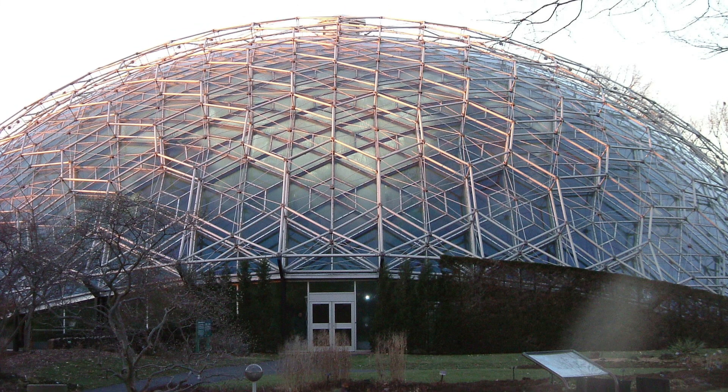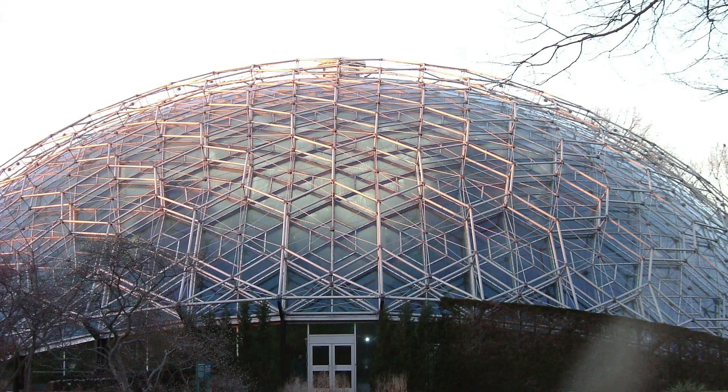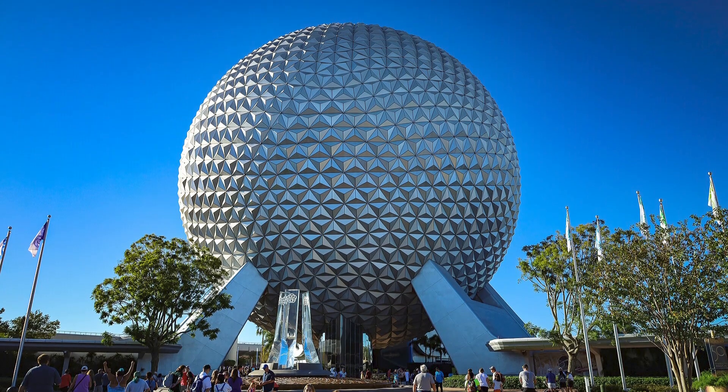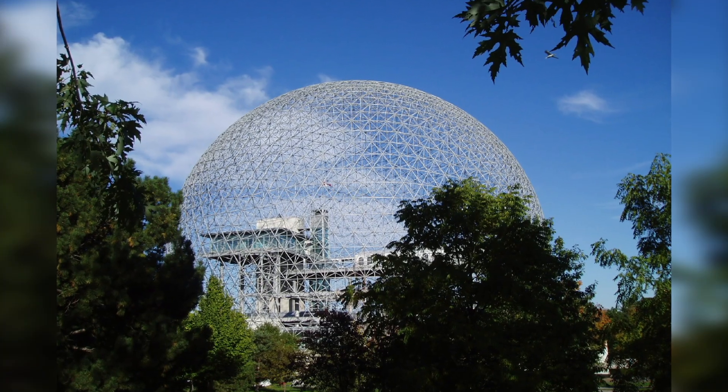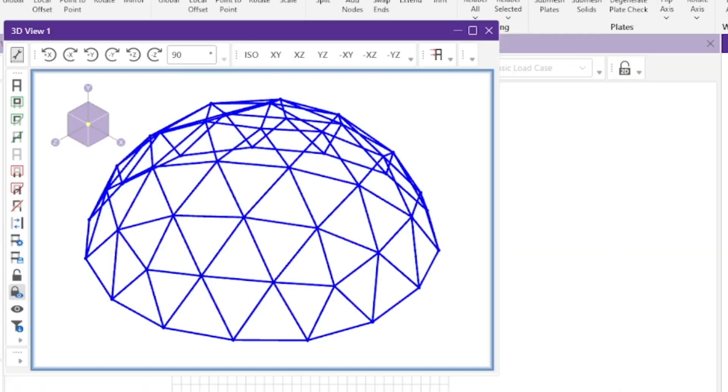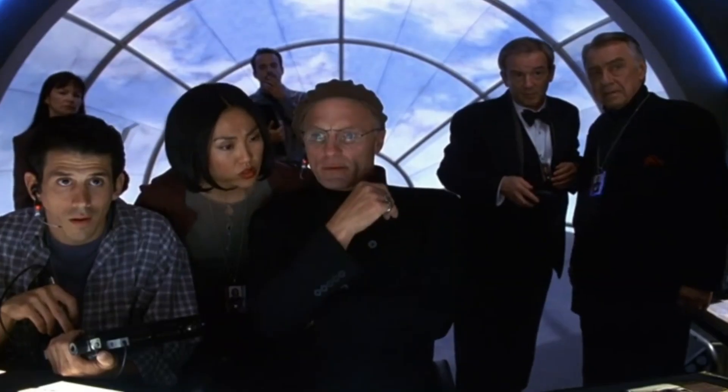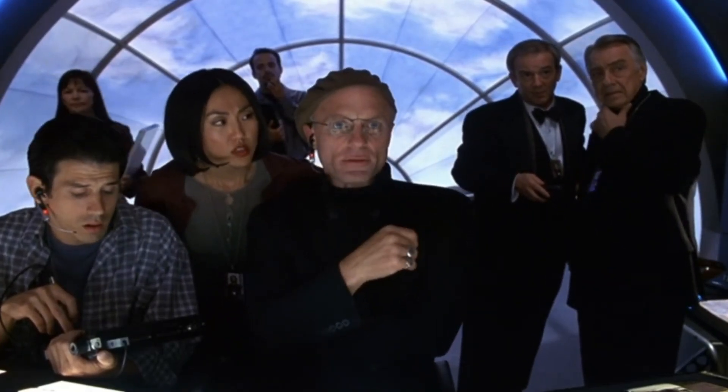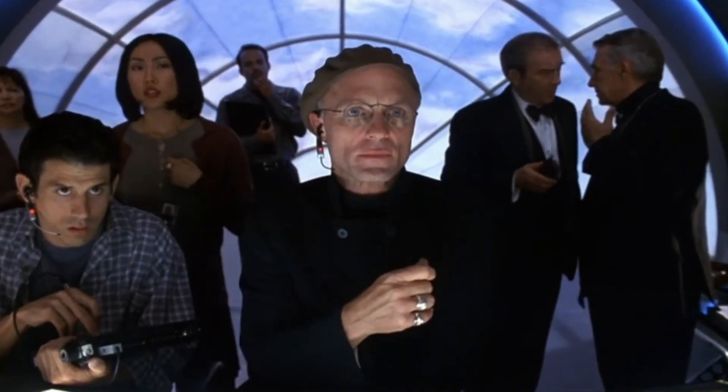But I'd also be remiss if I didn't at least mention the geodesic domes as well. You may be familiar with the Epcot Center and the pioneering work of Buckminster Fuller, which take advantage of the strong shape of triangles, the strength of modern steel, and arranged in a manner that is incredibly efficient. So maybe that could be a good system for Truman's Hollywood overlords to use when building their mega dome.